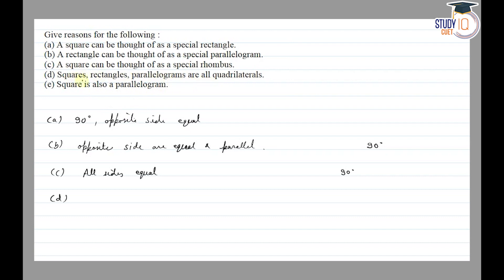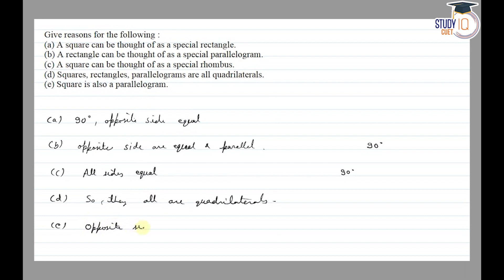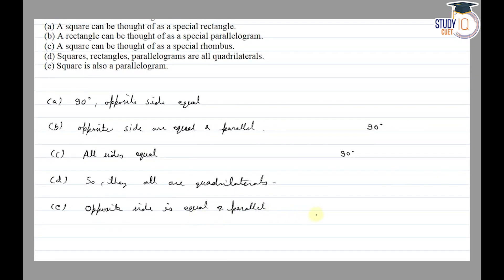Part d: Square, rectangle, and parallelogram are all closed figures with four sides, so they are all quadrilaterals. Also, a square is a special parallelogram because in a parallelogram opposite sides are equal and parallel, and in a square all sides are equal — so a square is a special parallelogram in which all sides are equal.